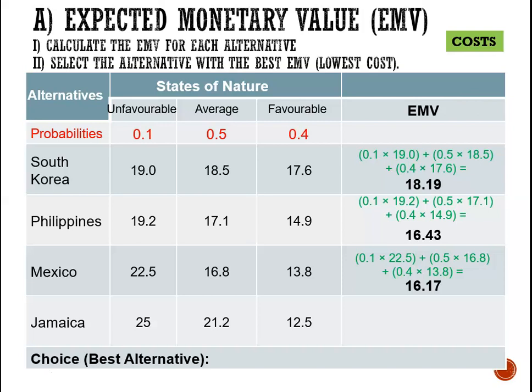For Jamaica, 0.1 × 25 + 0.5 × 21.2 + 0.4 × 12.5, and this gives us an expected cost of 18.1 million for Jamaica.